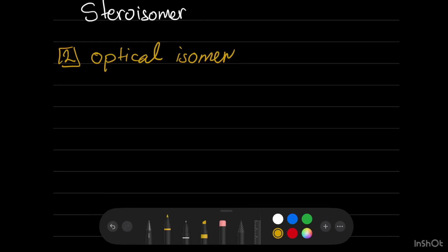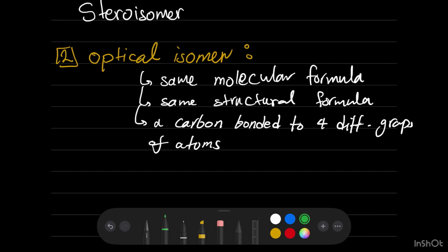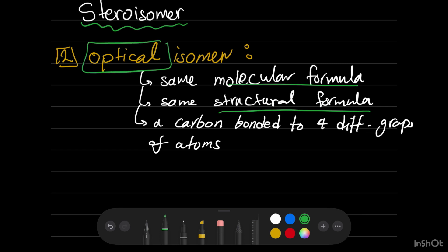Welcome again. Today we will complete the rest of the stereoisomerisms that we started in the previous class. If you need to understand the first part about geometrical isomers, you can check that video in the description box below. Now let's go to the optical isomer. Remember that stereoisomerism is a case where two molecules have the same molecular formula and the same structural formula, but a difference in arrangement in space. The same applies to optical isomers.